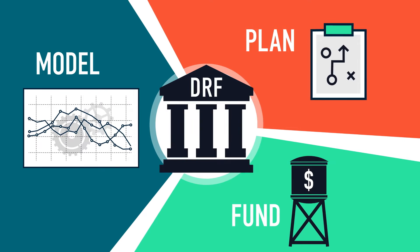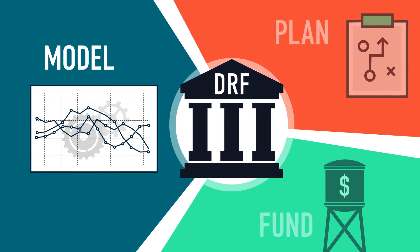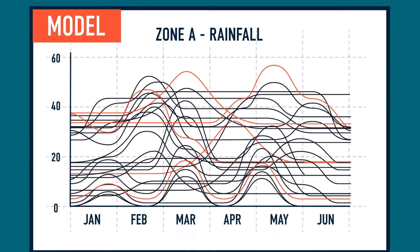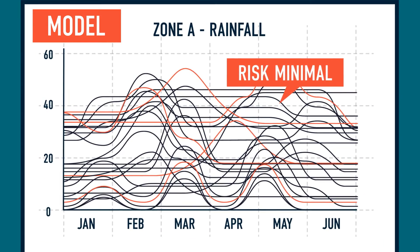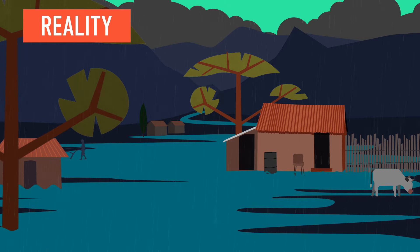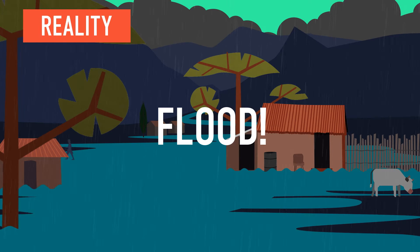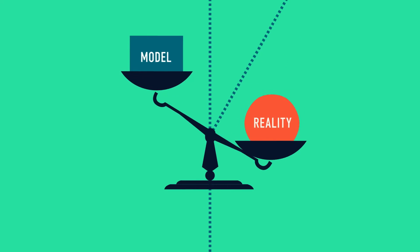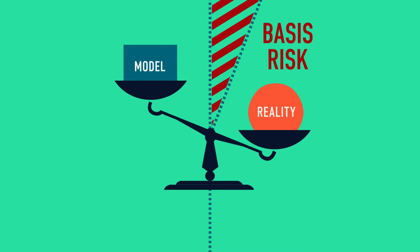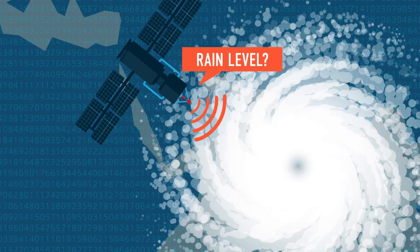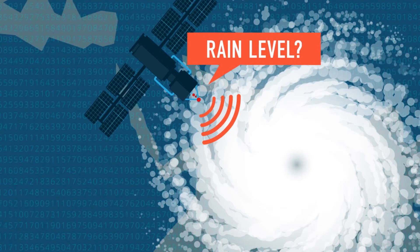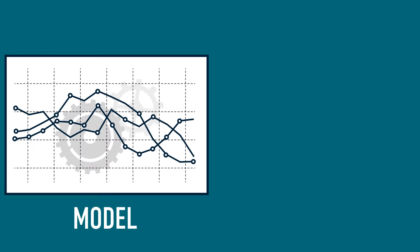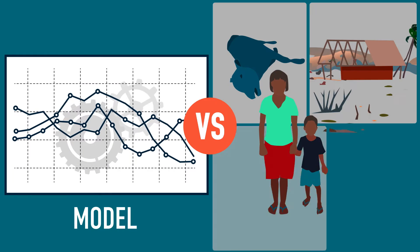However, a DRF system is only as successful as the scientific models it's based on. Scientific modeling is an attempt to predict what might happen or be happening, and all predictions have some uncertainty attached to them. The difference between what a scientific model predicts and what actually happens is often called basis risk. Basis risk exists because our ability to replicate or measure the complexities of natural processes through modeling is limited, and a model is always a simplification of reality.